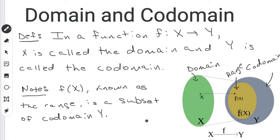So that's the difference between the domain and the codomain. Two different words. They mean two different sets, x and y. And the range, f of x, is a subset of the larger codomain. So I hope that helps.